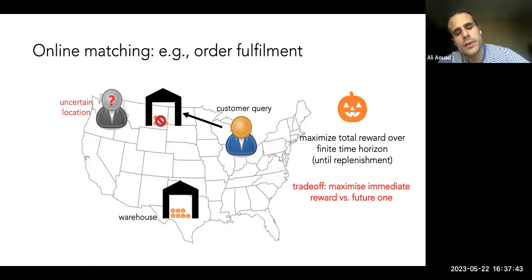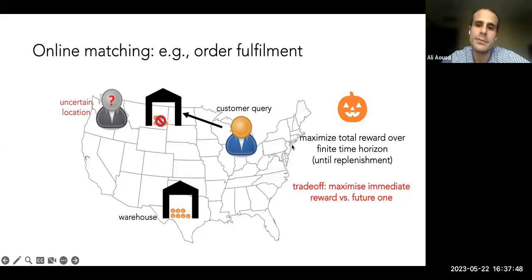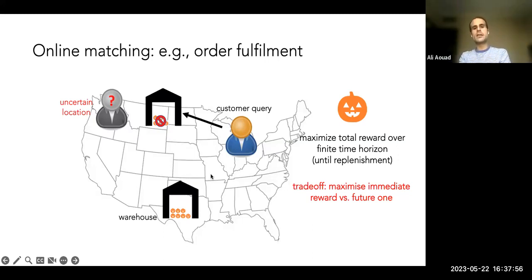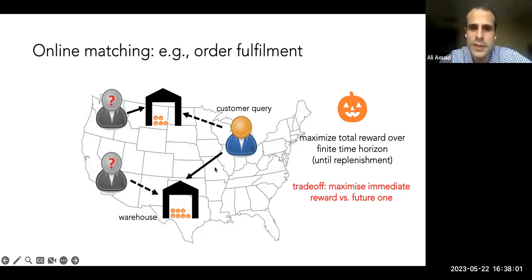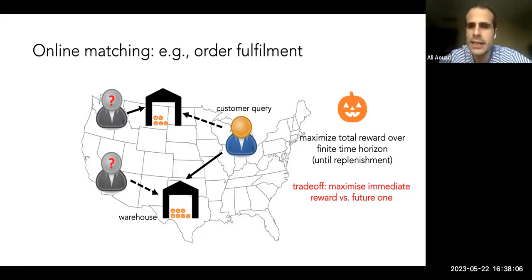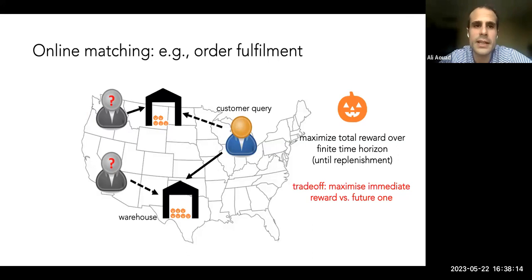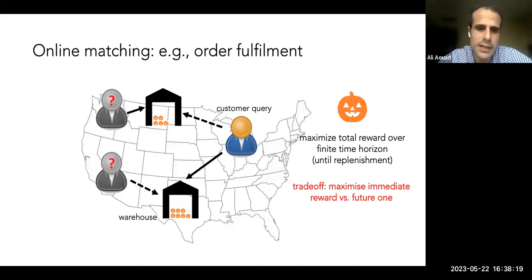I want to compare online decisions to something that is hindsight optimal. The objective is to maximize total reward, and there is a fundamental tradeoff between maximizing current rewards myopically for the current consumer versus leaving inventory in a strategic location to fulfill future demand. This tradeoff has been extensively studied across computer science, operations, economics, and stochastics.